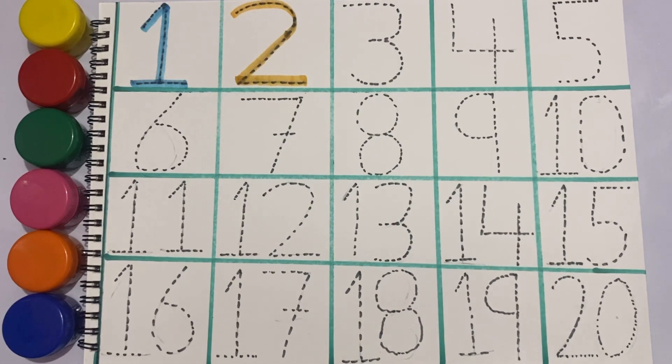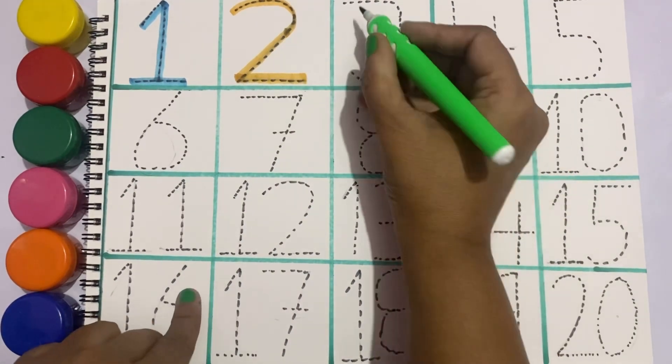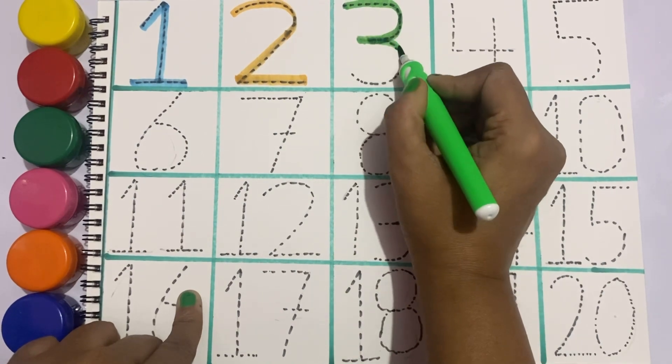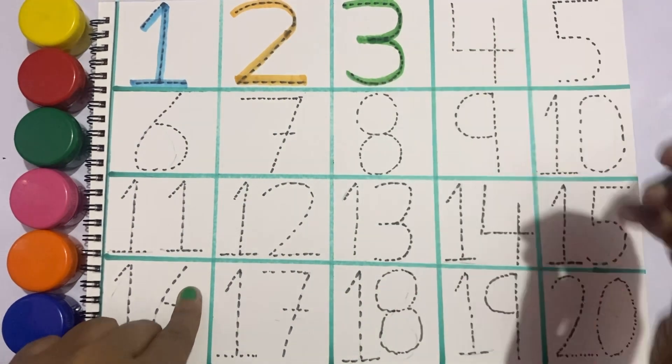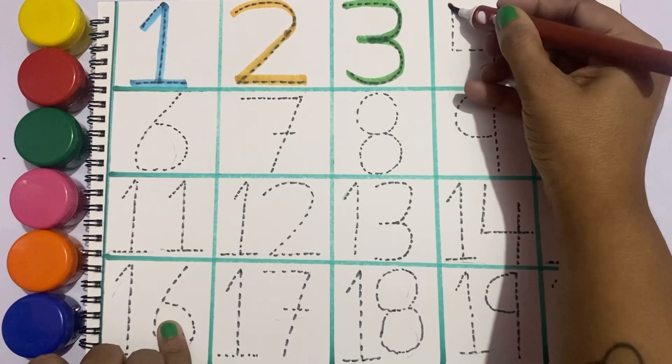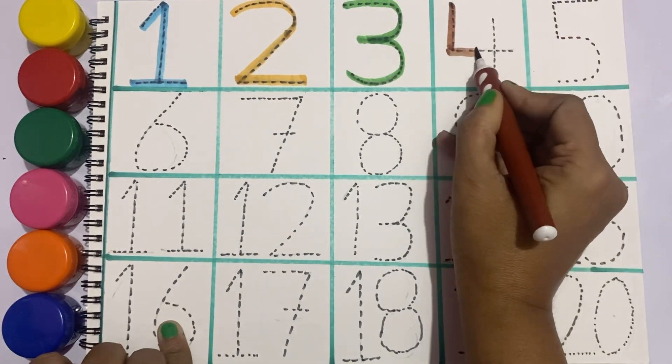Two. Parrot color, let's draw three. Three. Brown color, let's draw four.